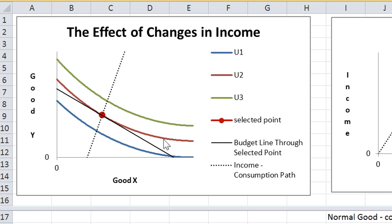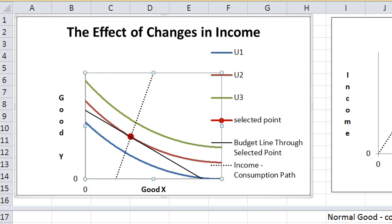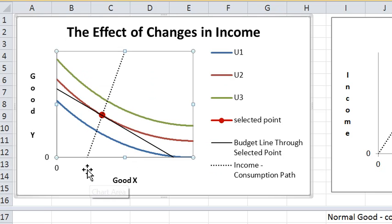The red indifference curve here is the indifference curve through that choice point. There's a lower indifference curve indicated in blue and there's a higher indifference curve indicated in green. And the dotted line represents the path of choices for the consumer as income varies.